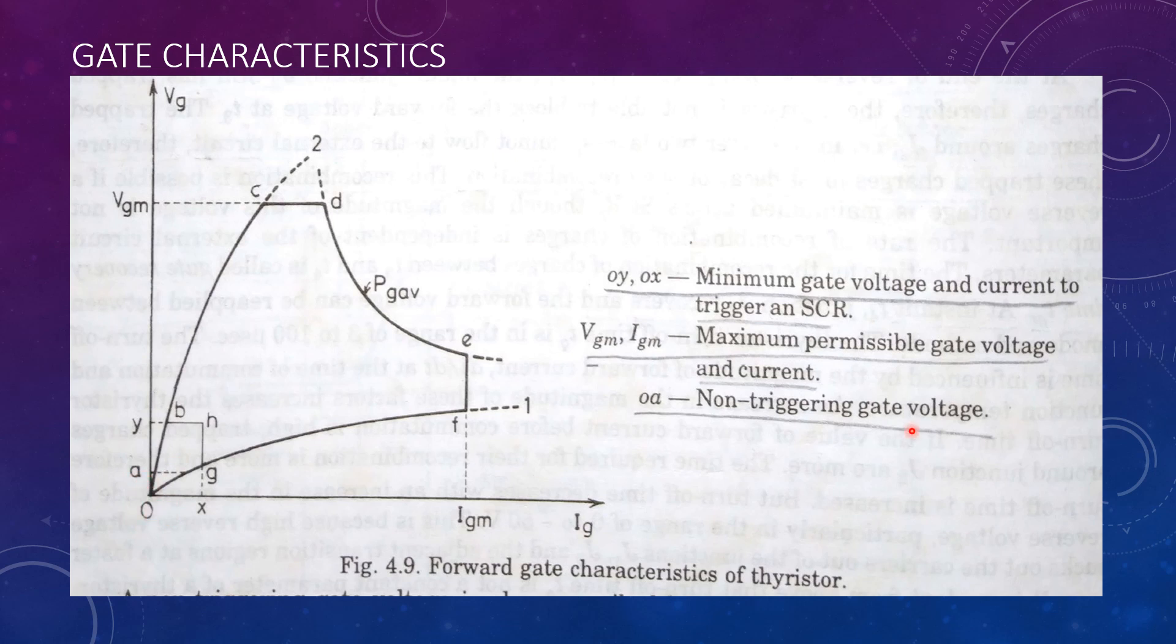OA represents the minimum non-triggerable gate voltage. All the noise signals and spurious signals must be below the value of OA so that the thyristor does not get turned on at any undesirable instant.